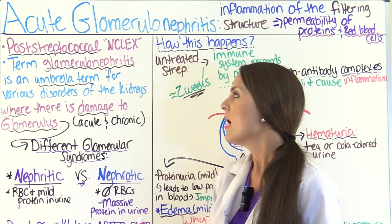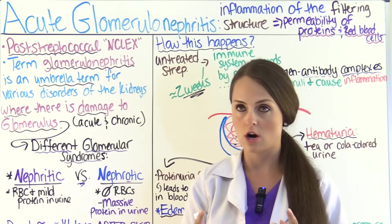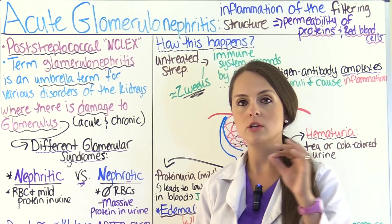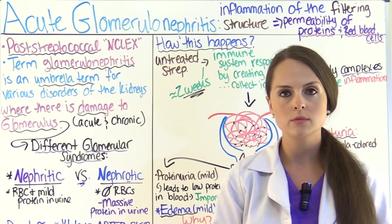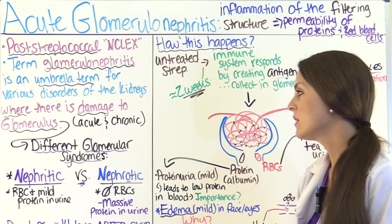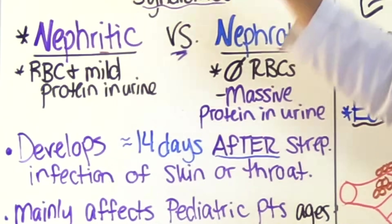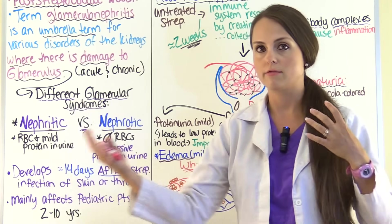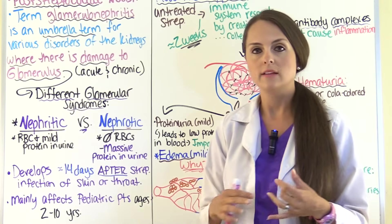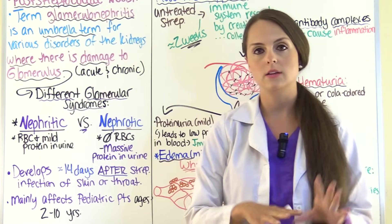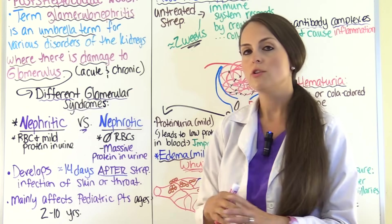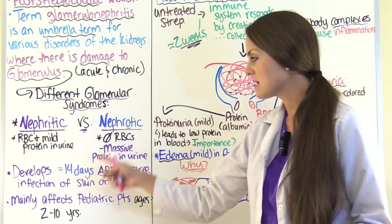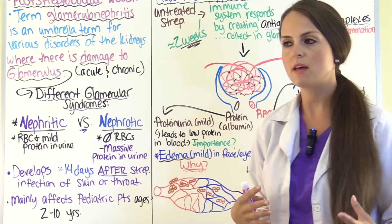The term glomerulonephritis is an umbrella term for various diseases of the kidneys where there is damage to the glomerulus. You can have acute forms or chronic, and there are different glomerular syndromes. With nephritic syndrome — which is what post-streptococcal is — you'll see a loss of red blood cells and mild amounts of protein in the urine. With nephrotic syndrome, you won't see red blood cells but there will be massive amounts of protein lost in the urine.